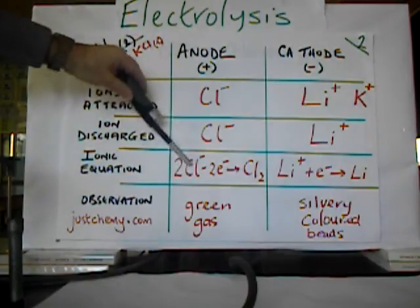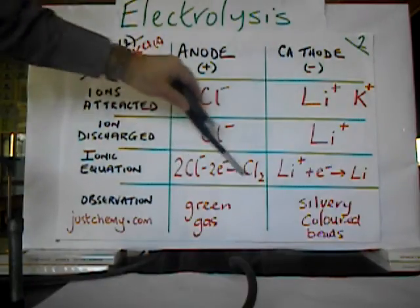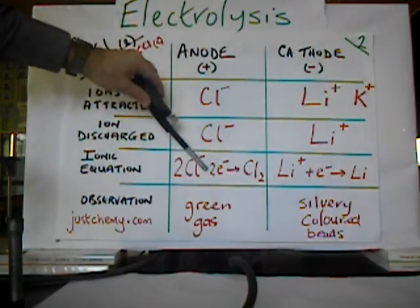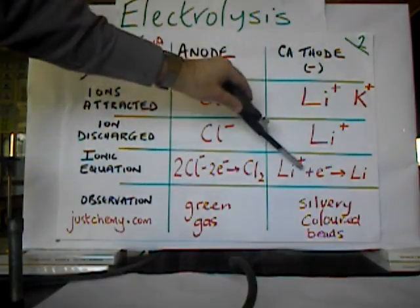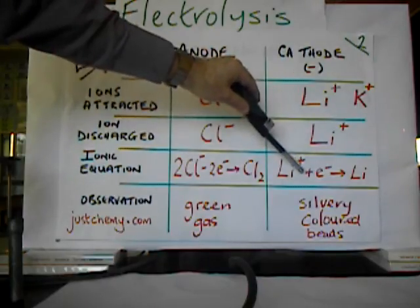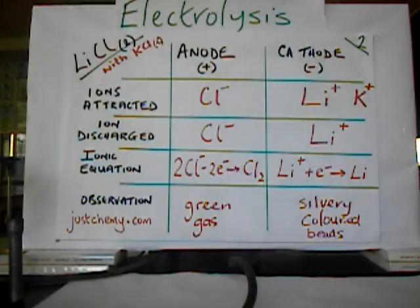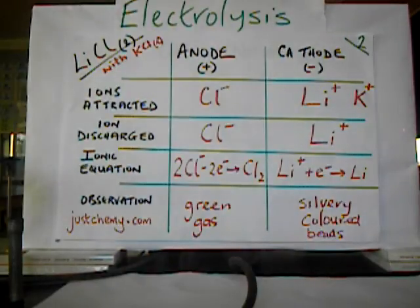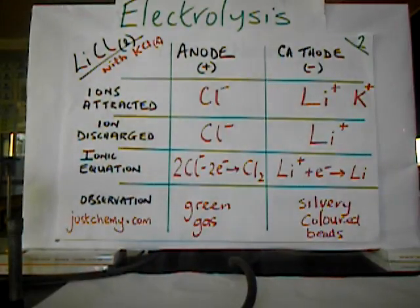In summary: oxidation — the removal of electrons — takes place at the anode, along with the addition of oxygen; reduction takes place at the cathode. Potassium chloride was used to lower the temperature of the melt, that's what is called the electrolyte, but the potassium ions are not discharged — the lithium ions are preferentially discharged instead.